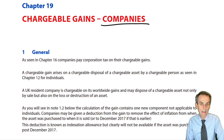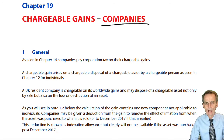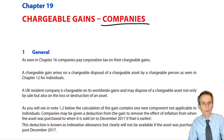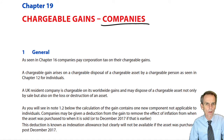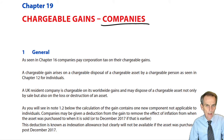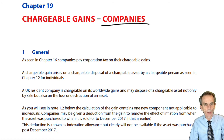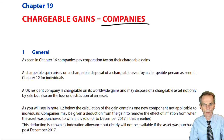We saw back in Chapters 12 to 14 how we dealt with the taxation of such gains on individuals — how we computed the gain or indeed allowable loss that arose on each individual disposal, what we then did with those gains, and subsequently, having got the figure of taxable gains, how much CGT liability would be payable.